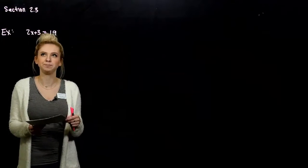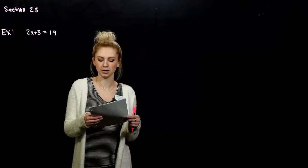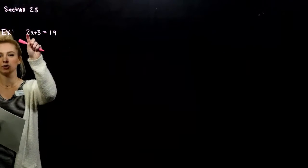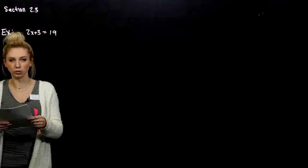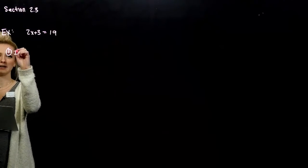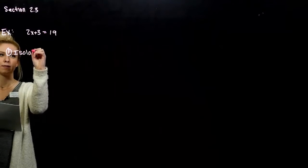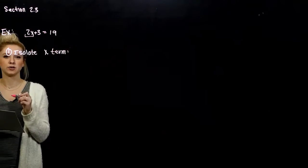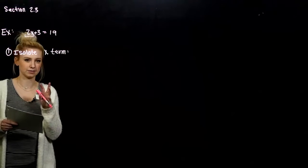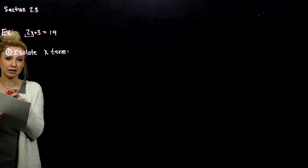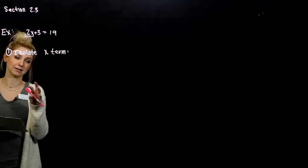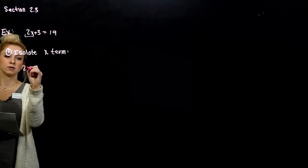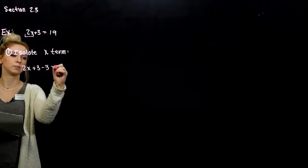In this first example, given in section 2.3, the very first thing we want to do is isolate the x term — the coefficient and whatever variable is there, in this case x. So I want 2x on its own. Whatever coefficient is on the front of x needs to stay with it for now. We have to get that on its own before we can isolate x. So we need to move 3 to the other side — we need to get rid of it. We subtract 3 from both sides.